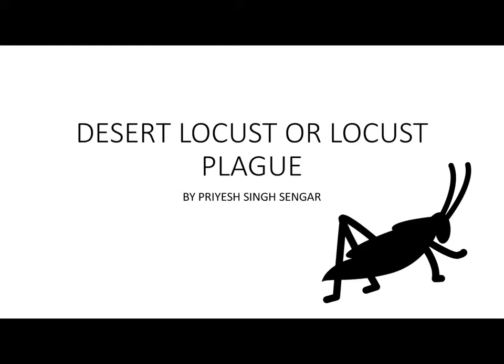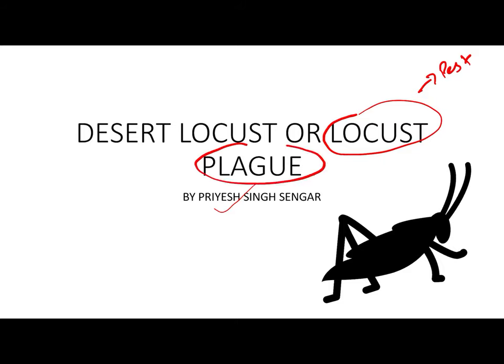Today's topic is desert locust or locust plague, which is in the news and relevant for geography, environment, and agriculture. There are two key words: 'locust' and 'desert' or 'plague.' Locust is a type of pest or insect causing famine or crop destruction. Desert locust is one type of grasshopper among four varieties which enters into India.